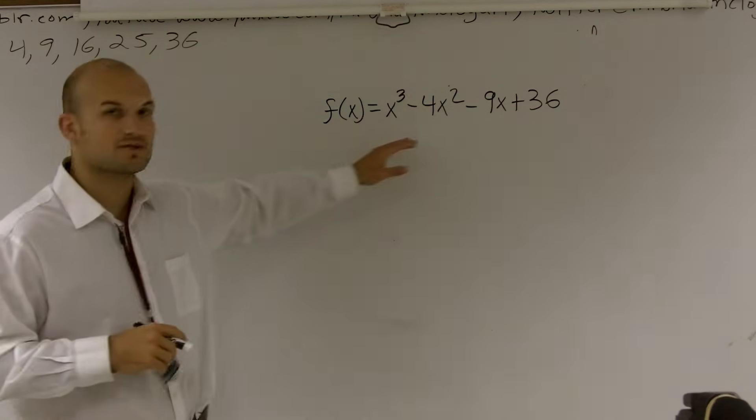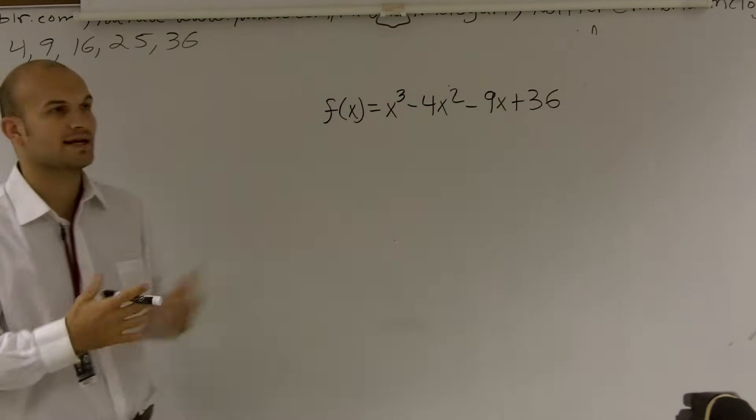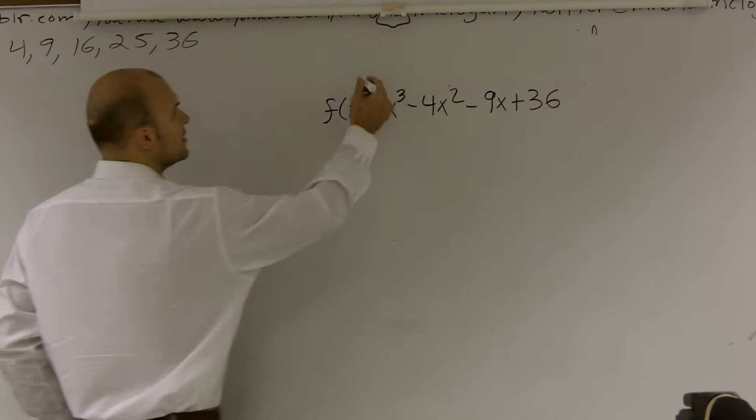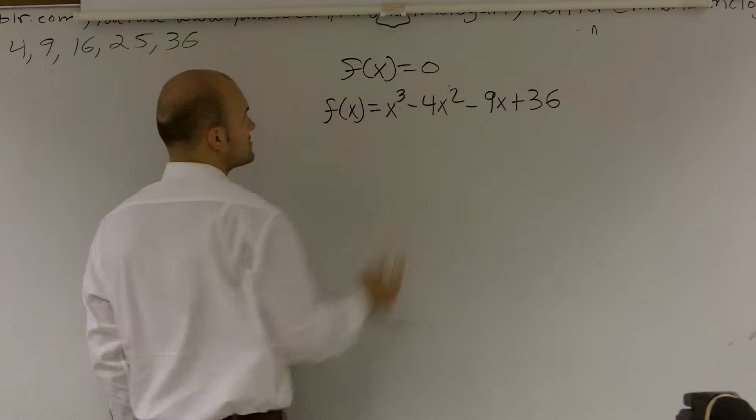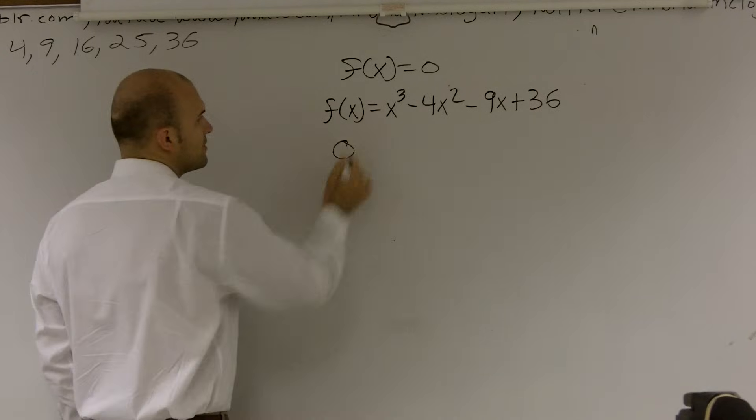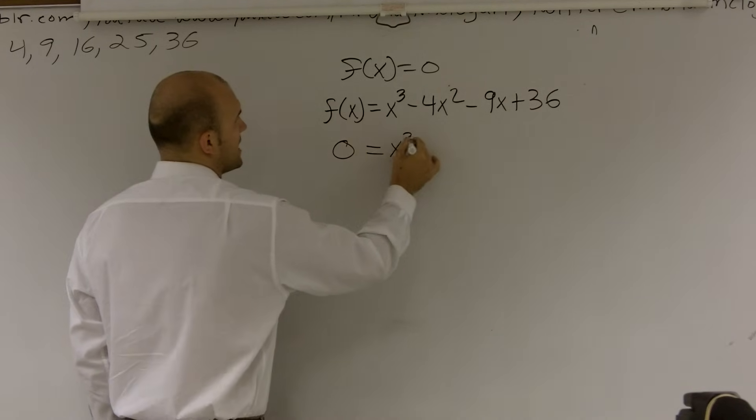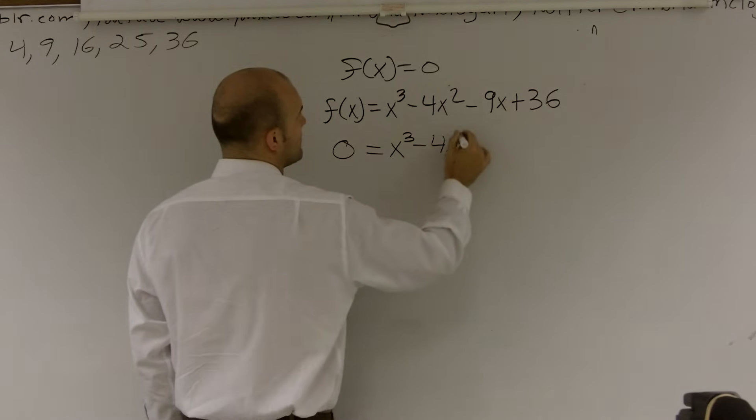On this problem, it says find the zeros of the function. So again, when we're looking at finding the zeros, we know that we need to figure out what are the values of x when f of x equals 0. So again, we plug in 0 for f of x, and we're going to have to determine what our values of x are.